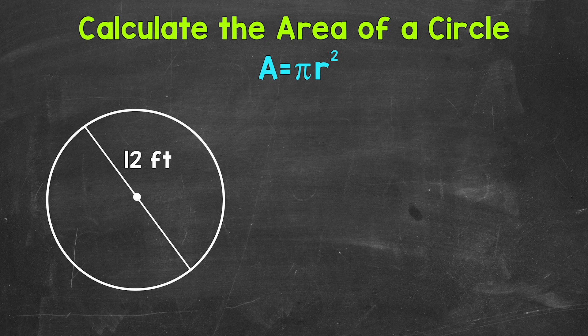Before we get into our example, let's talk about pi, which is the ratio of a circle's circumference to its diameter. Pi is a constant, so it's the same for all circles. Now pi is irrational — it goes on forever — so we are going to use an approximate or rounded version of pi: 3.14.